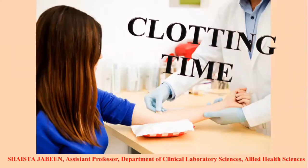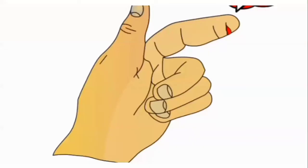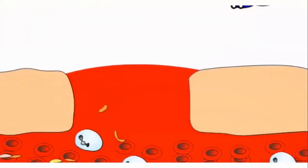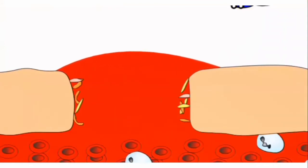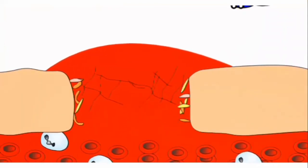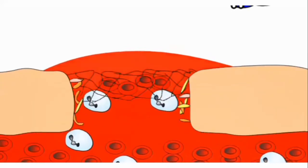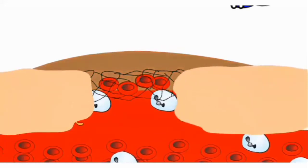This video is about clotting time. Clotting time is a test used to measure the time required for the blood to coagulate in vitro under standard conditions. Blood is drawn from a person and assessed for how much time it will take for it to clot. This test is used to detect the functions of platelets and other clotting factors, which are involved in clotting mechanisms and prevent excessive bleeding from the body.